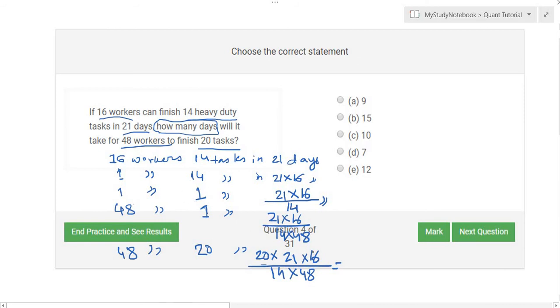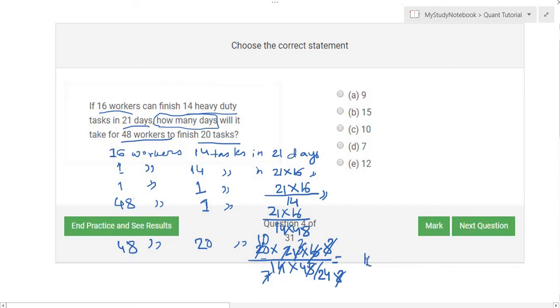answer would be. We can simply use a calculator or do simple arithmetic to find our answer. The answer here is 10. So the correct option is 10 days. This is an example of how we can solve worker and time related math problems. I hope this helps.